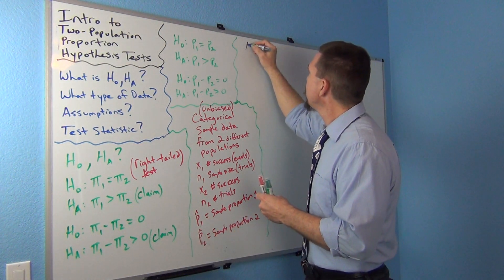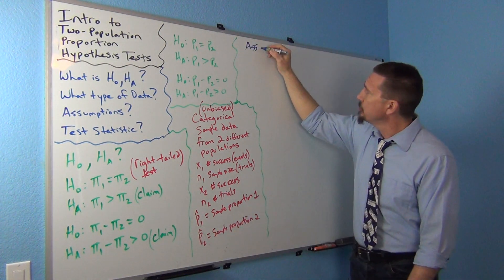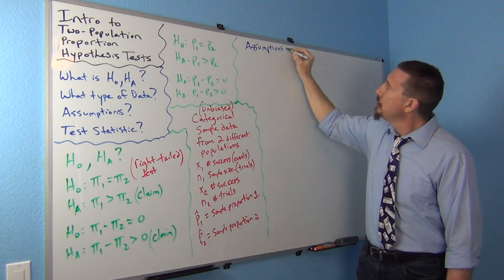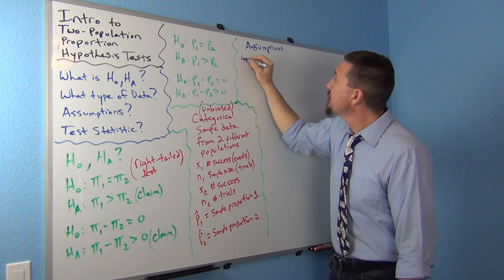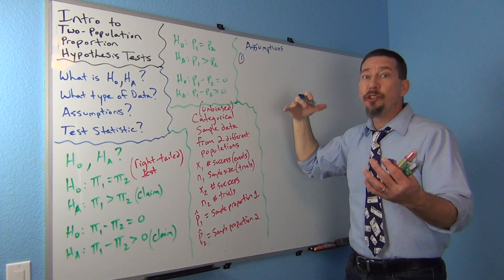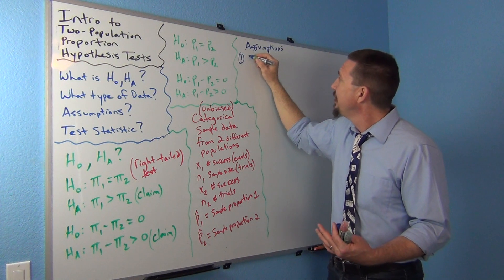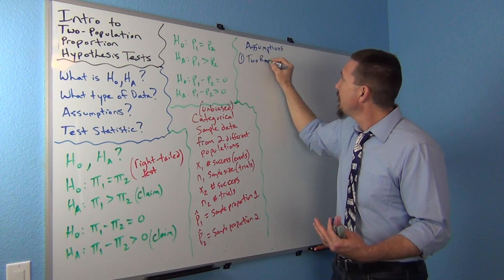So our assumptions - let's do that. Assumptions. We want, of course, usually two simple random samples would be nice. So we want random samples. Two random samples would be good.